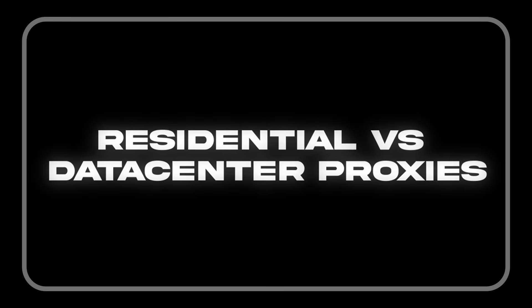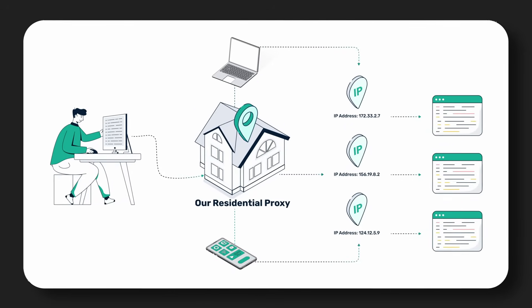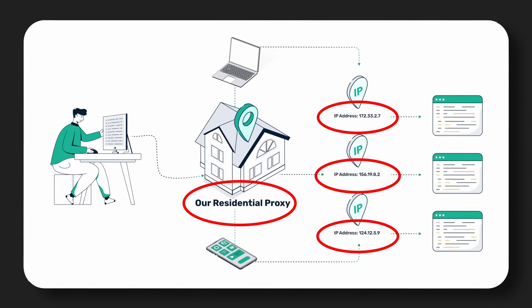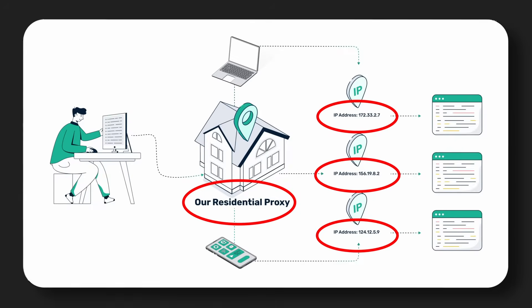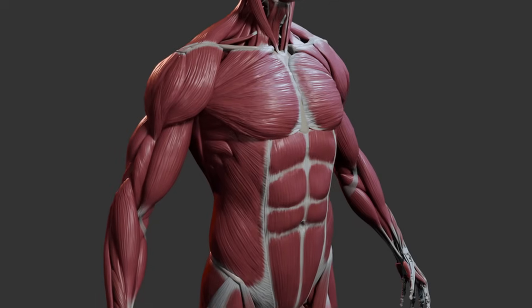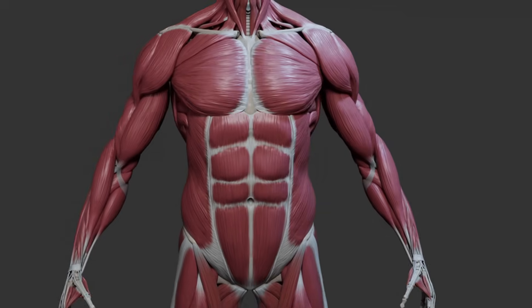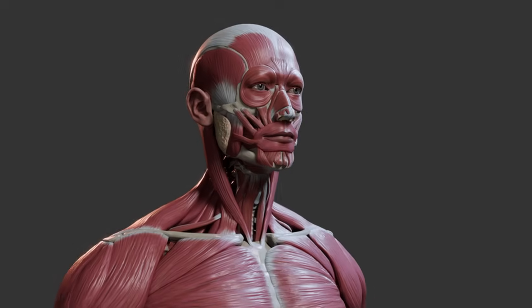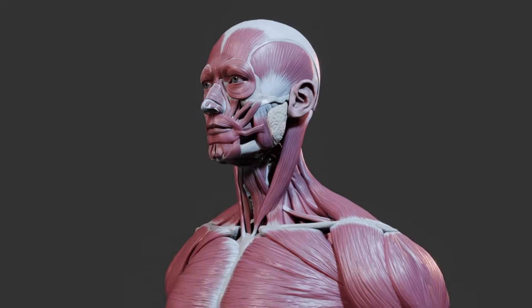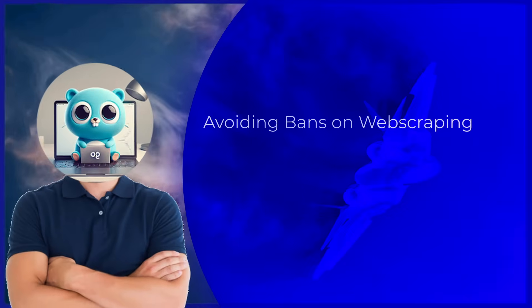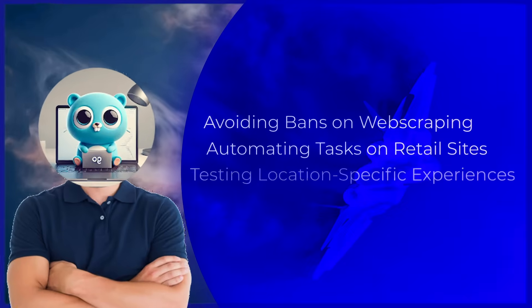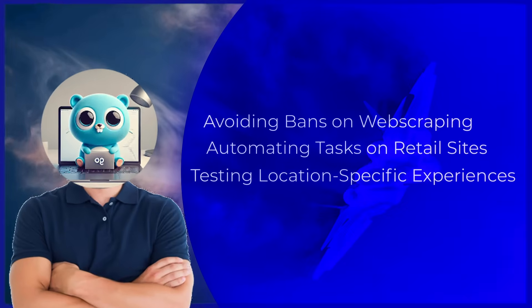How about residential versus data center proxies? A residential proxy routes your internet traffic through an IP address assigned to a real physical device by an internet service provider or ISP. These IPs belong to actual households or businesses. As a result, residential proxies appear like genuine human users to websites, making them extremely useful in cases where stealth is important — like avoiding bans on web scraping, automating tasks on retail sites, or testing location-specific experiences.